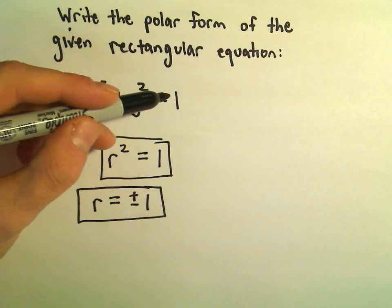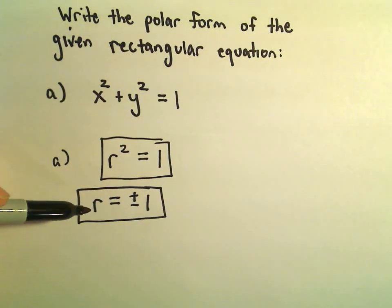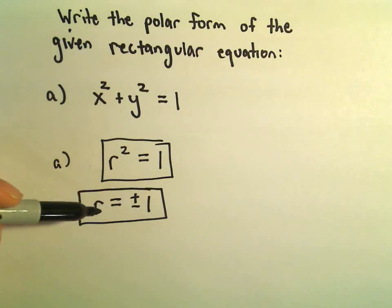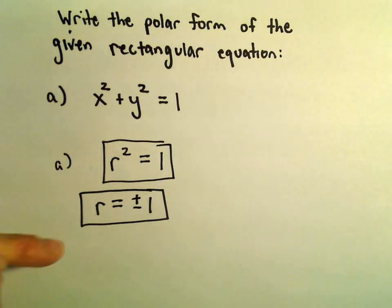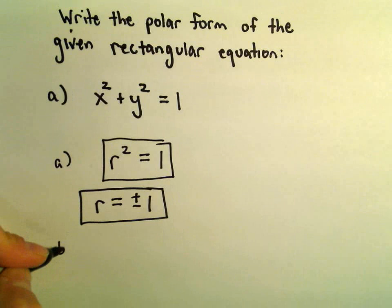You know, x squared plus y squared equals 1. This is a circle of radius 1. And r equals positive 1, or equivalently, r equals negative 1 will also both be equations of a circle of radius 1. So much more simple to describe a circle using polar coordinates.